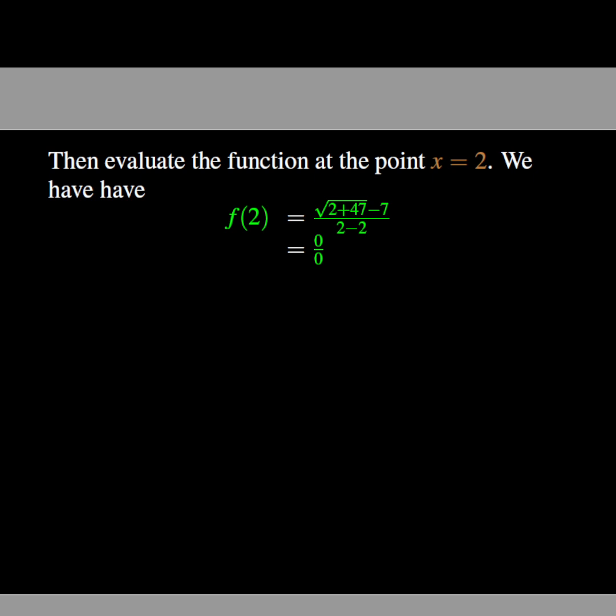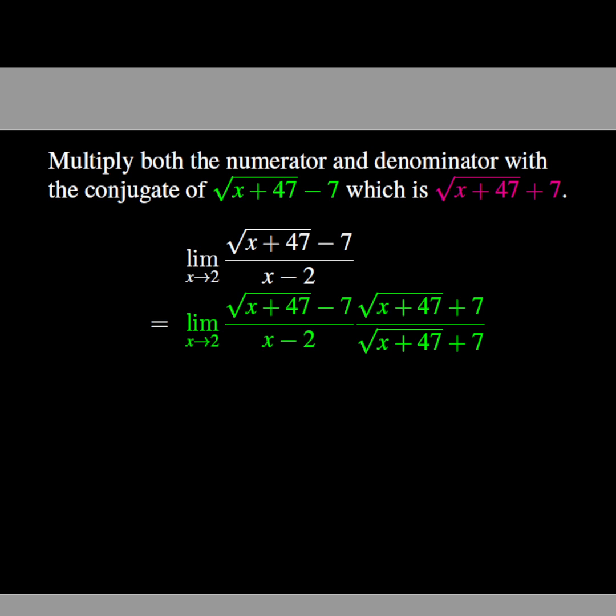This is an indeterminate form. To address this issue, we must simplify the expression using basic algebraic techniques. This implies multiplying both numerator and denominator by the conjugate of √(x+47) - 7.